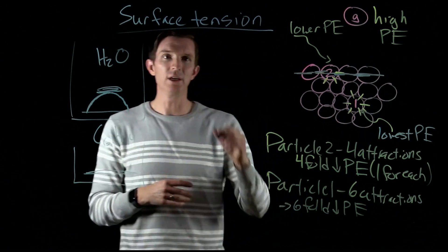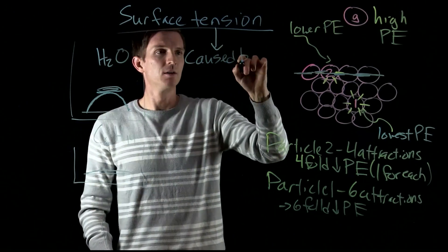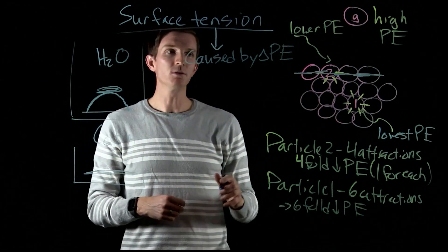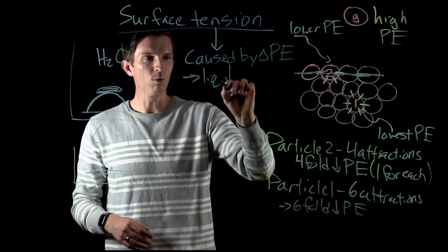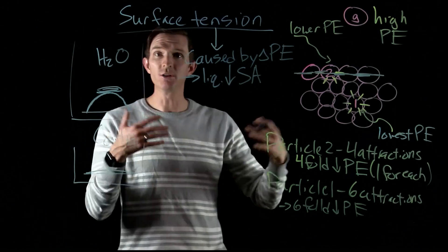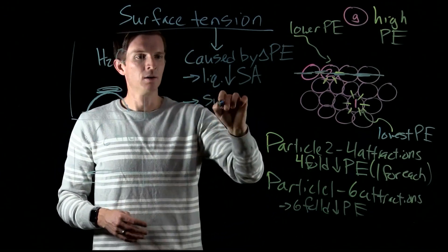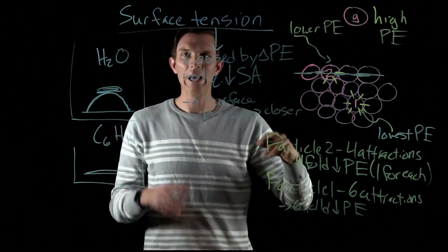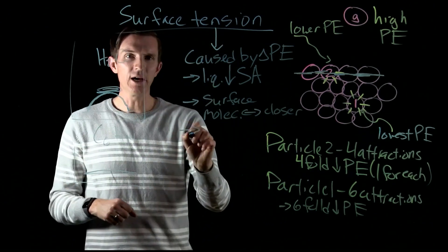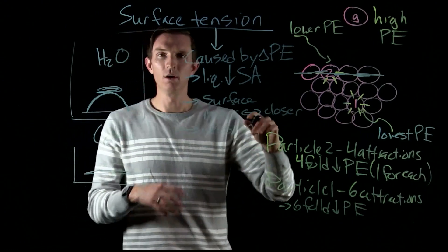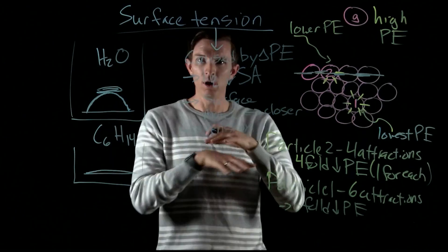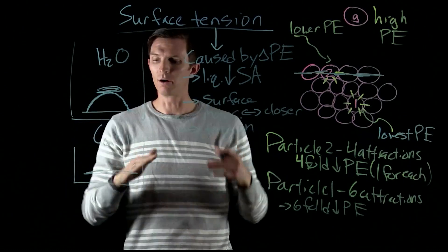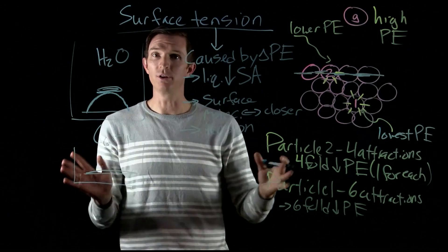Surface tension is caused by a difference in potential energy between our bulk and surface molecules, and the liquid will want to minimize its surface area as much as it can. As the surface molecules get closer, that creates tension on the surface — which is why water-striding bugs can walk on water, or a razor blade or paper clip can settle on water. We wouldn't see the same with hexane, because hexane does not have really strong attractions.